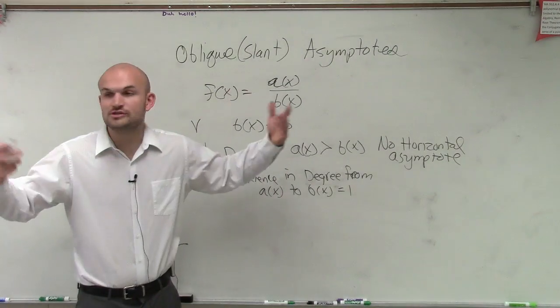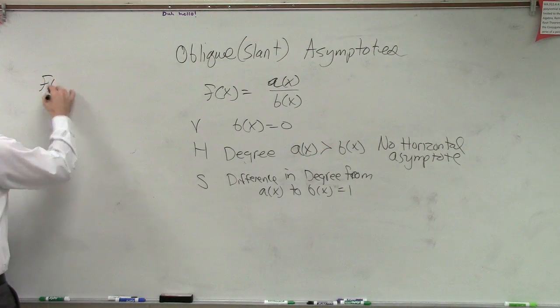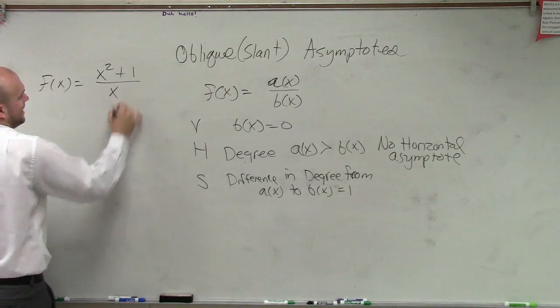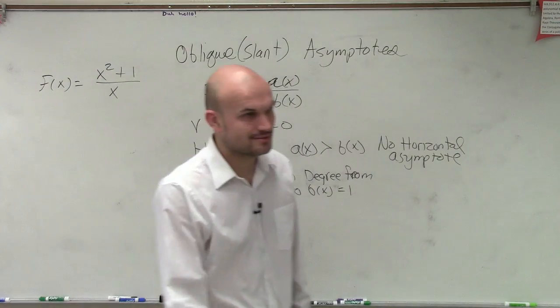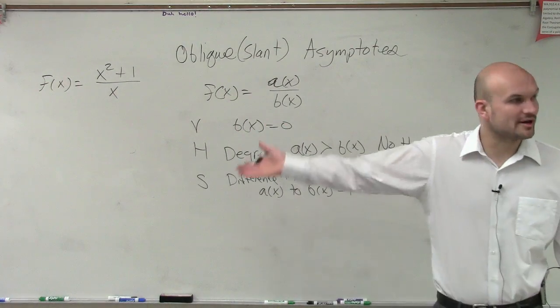So what I'm saying is, if you subtract the degrees, if I had f of x equals x squared plus 1 divided by x, what is the difference in the degrees between a of x over b of x? 1. So therefore, it has a slant asymptote.